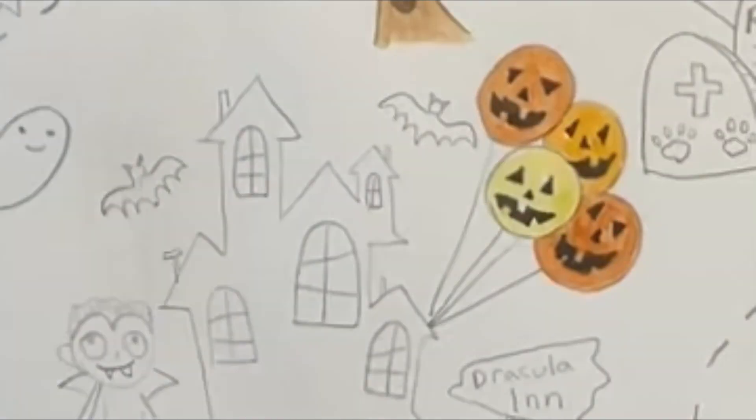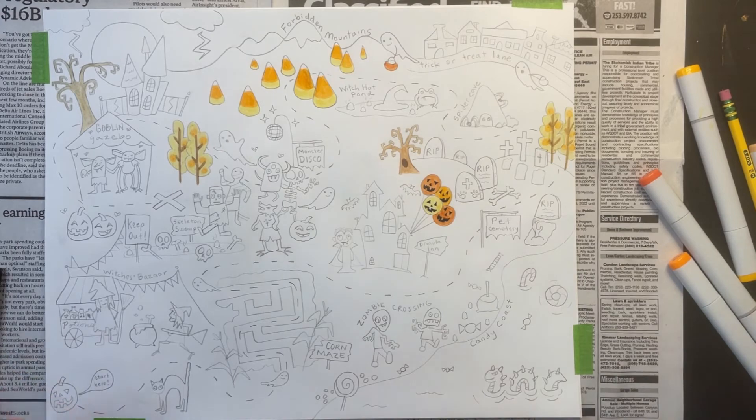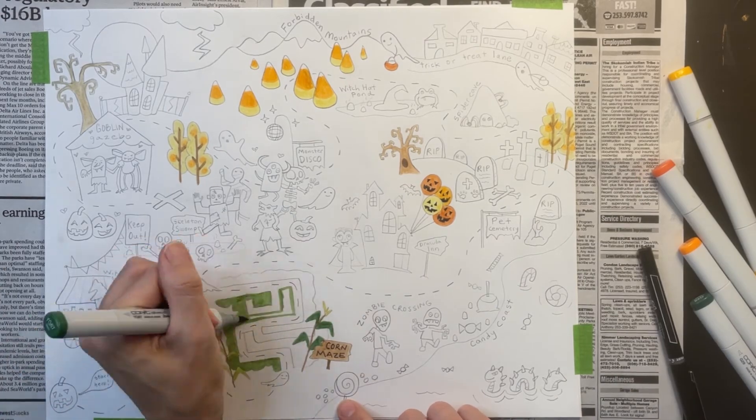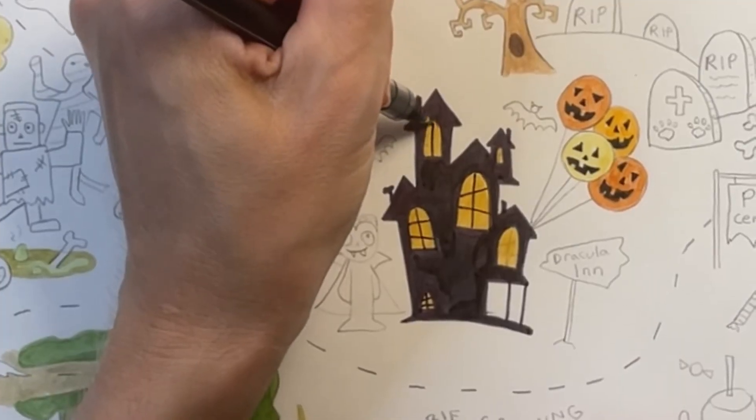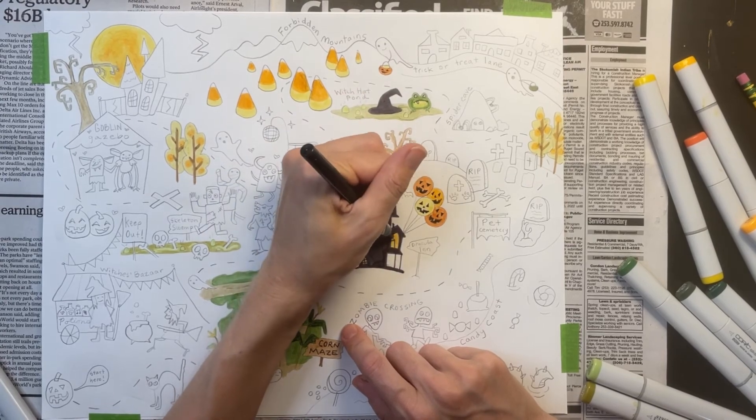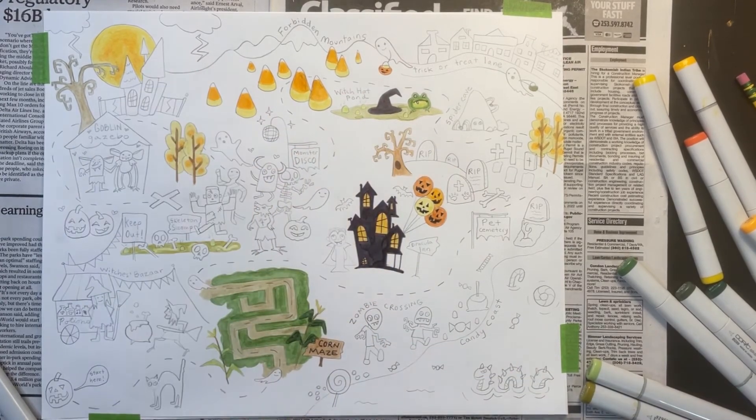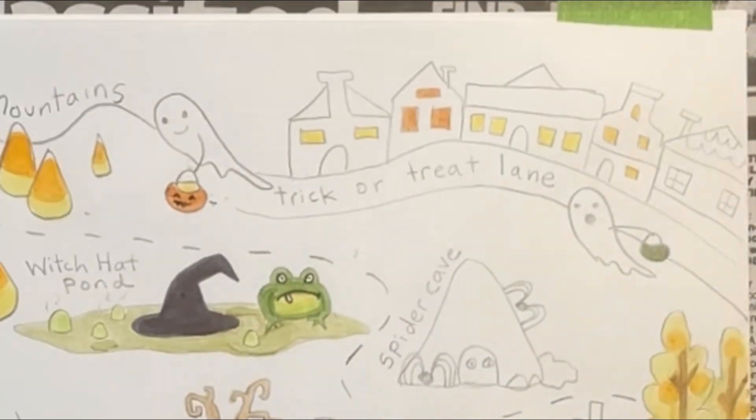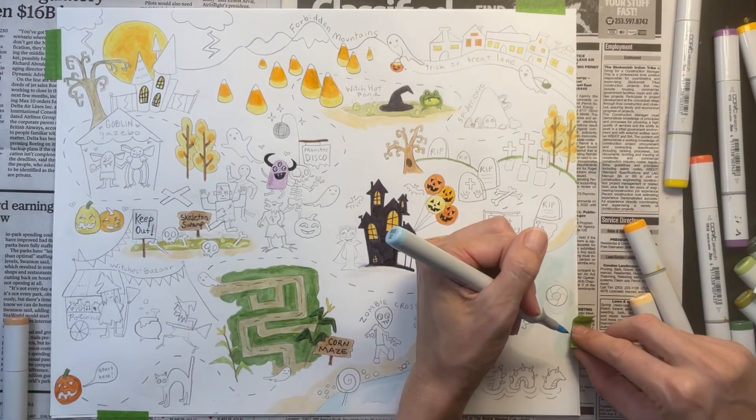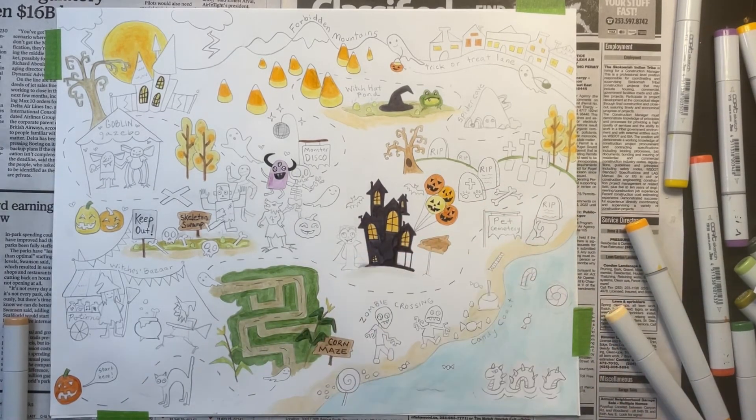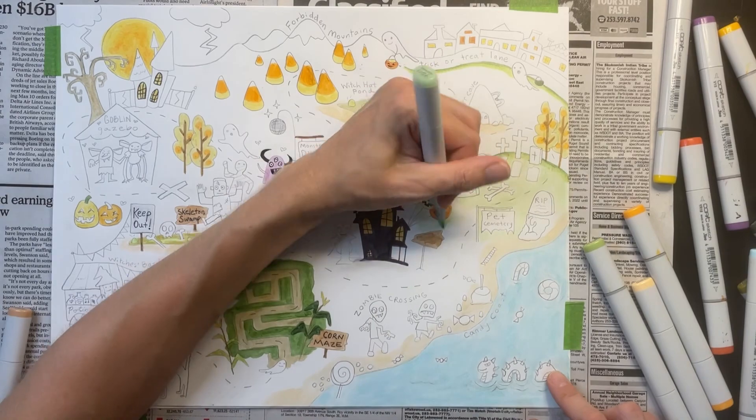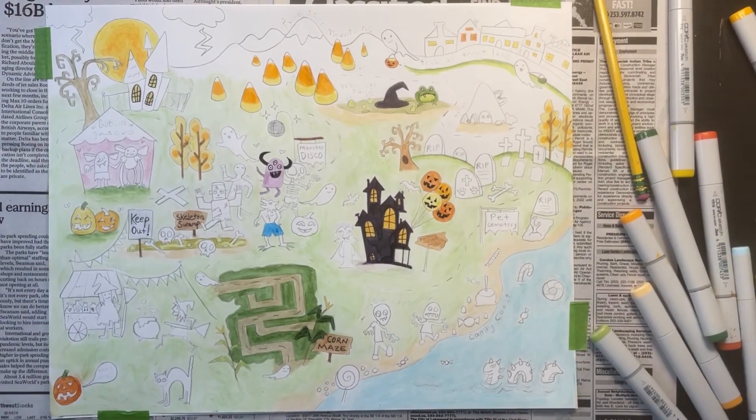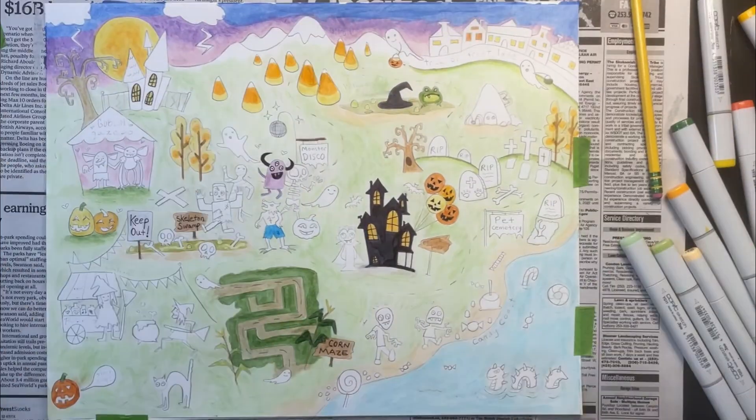I'm coloring the outside of my corn maze green. See how I've made my Dracula Inn all black with orange windows? I love that. I like to use yellow and orange to color in windows because it makes it look like lights are on inside the house. I'm using light blue to color in the water. I'm using a light green to color in the land area. I'm adding a pink and purple sunset to the sky.